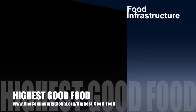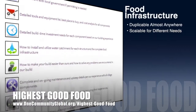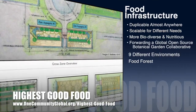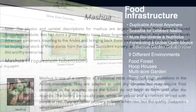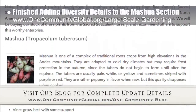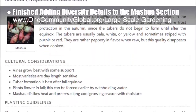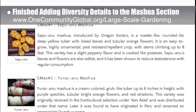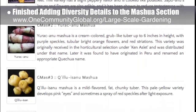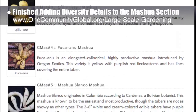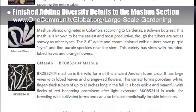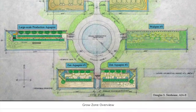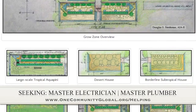One Community's approach to Highest Good Food is duplicable almost anywhere, scalable for different needs, more biodiverse and nutritious, part of forwarding a global open source botanical garden collaborative, and includes nine different free shared and duplicable growing environments. This week, the core team finished adding the diversity details to the Mashua section of the large-scale gardening page — including cultural considerations, planting guidelines, and purchasing details. Mashua is an Andes root vegetable, and the complete page now contains hundreds of rare and heirloom foods, the product of five team members and hundreds of hours of work. We are seeking a master electrician and a master plumber to help out.